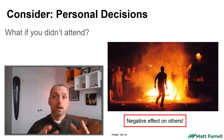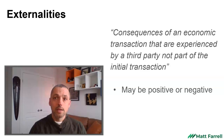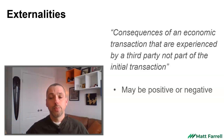In economics, there's a name for that. It's called an externality. An externality is the consequence of an economic decision — a transaction between two people or two agents — however, the effects are felt by a third party. These could be positive, like the contribution to a local economy, or they could be negative, like property destruction.